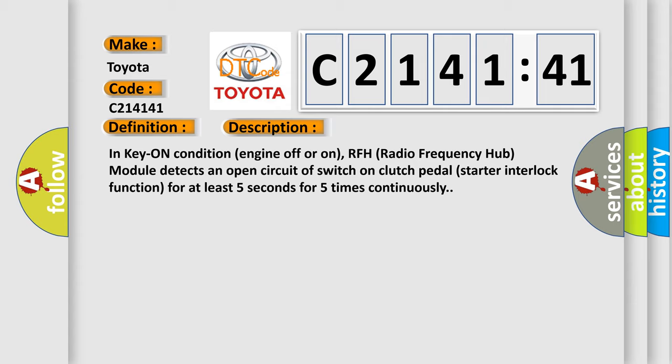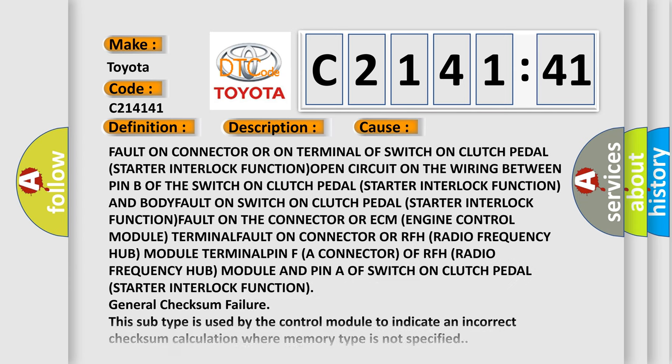In key-on condition, engine off or on, RFH radio frequency hub module detects an open circuit of switch on clutch pedal starter interlock function for at least five seconds for five times continuously.